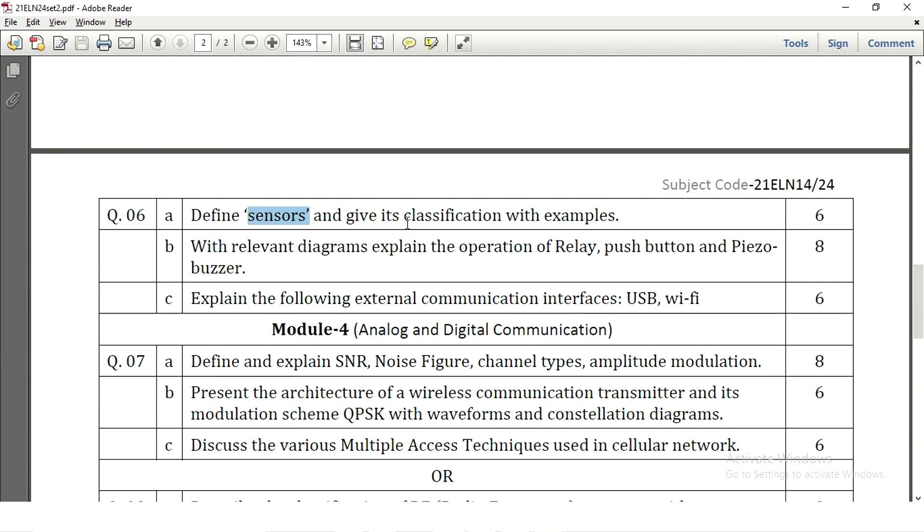Then question number 6. Define sensors and give the classification with examples. Sensors classification, some 5 to 6 sensors can be explained how they are going to be useful and then with relevant diagrams explain the operation of relay, push button switch and a piezo buzzer. Three questions are there here. We need to explain relay with the diagram, push button switch with the diagram and piezo buzzer with the diagram. So this can be splitted as 2 plus 2 plus 2 plus 2 like that or 3 plus 3 plus 2 like that. Explain the following external communication interfaces USB as well as Wi-Fi. So block diagram and the concept need to be explained. It carries 3 marks and Wi-Fi carries 3 marks.